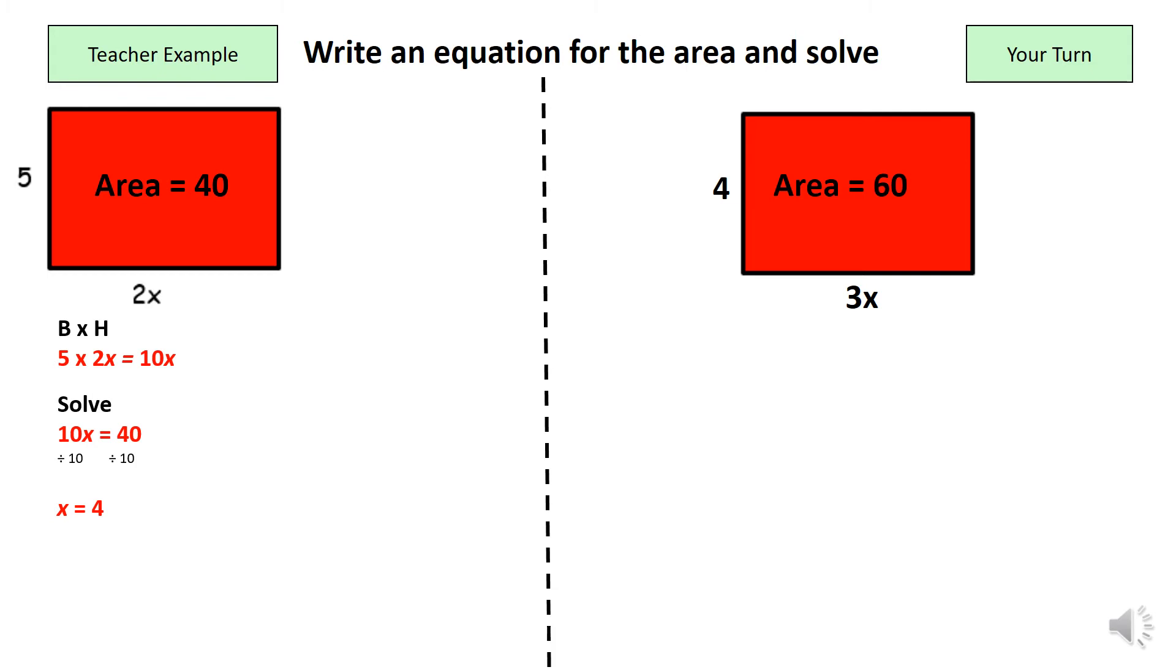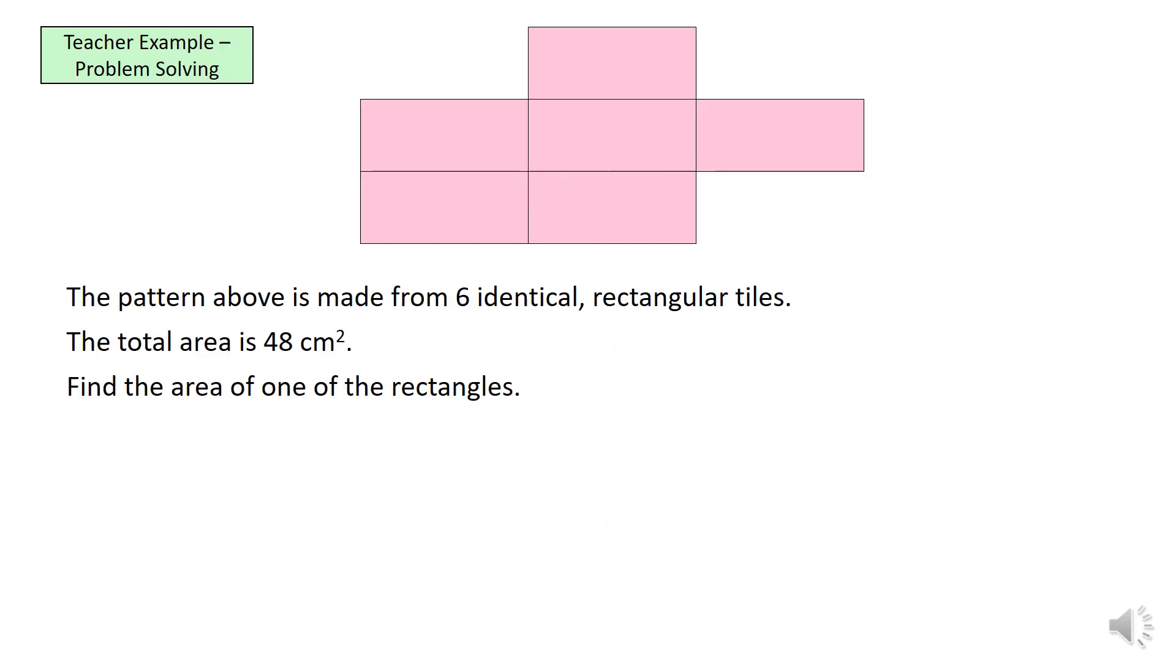Okay, we should have answered this question. And what we would have got is 12x equals 60 and divide both sides by 12 which would have given us x equals 5. Alright, now moving on, slightly trickier problem-solving questions.